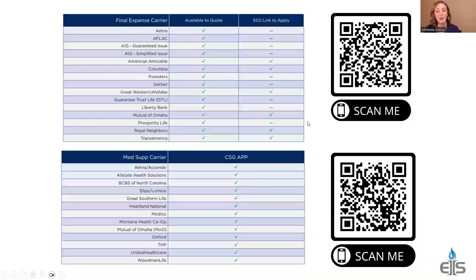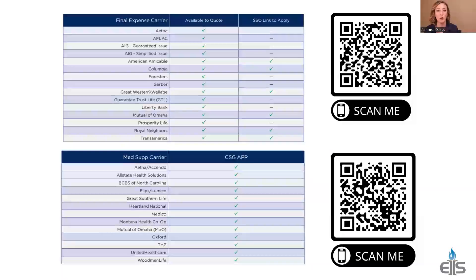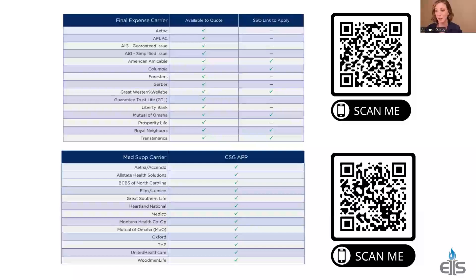Not all carriers are available on here yet. I know I talk a lot about writing all your carriers in one portal, but it's not all carriers — however, the majority of the major names are on here. For final expense, here are the carriers available. For med sup, here are the carriers. If you're not already working with an Integrity partner or don't have these contracts within the Integrity family, please reach out to us. These QR codes will take you to a form to request some of these carriers.